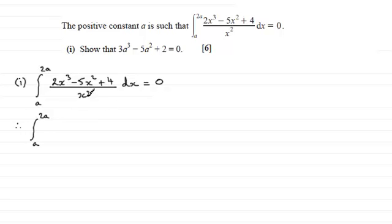Well here we've got 2x cubed divided by x squared and that is going to be 2x. Then you've got minus 5x squared divided by x squared. The x squareds would cancel just leaving you with minus 5. And then you've got plus 4 over x squared. Well that's the same as 4 multiplied by x to the power minus 2. Remember 1 over x squared is x to the power minus 2. So you'll end up with 4x to the power minus 2.